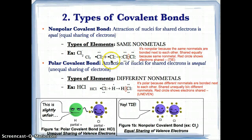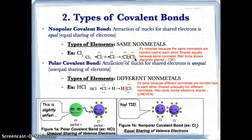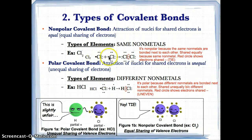An example of a nonpolar covalent bond is Cl2, where there are two Cl atoms with equal sharing of electrons. This bond forms when the lone single electron on each Cl atom pairs up in the middle. On the outside of each Cl, there are six valence electrons not in the middle, and two valence electrons shared in the middle, giving each Cl atom eight valence electrons total.